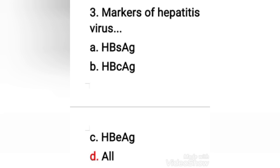Next question: markers of hepatitis B virus — HBsAg, HBcAg, HBeAg, or all? The right answer is option D, all. The serum markers of hepatitis B virus infection are complex, mainly including hepatitis B virus surface antigen and antibody to HBsAg, HBeAg and antibody to HBeAg, and antibody to hepatitis B virus core antigen. So the right answer is option D.